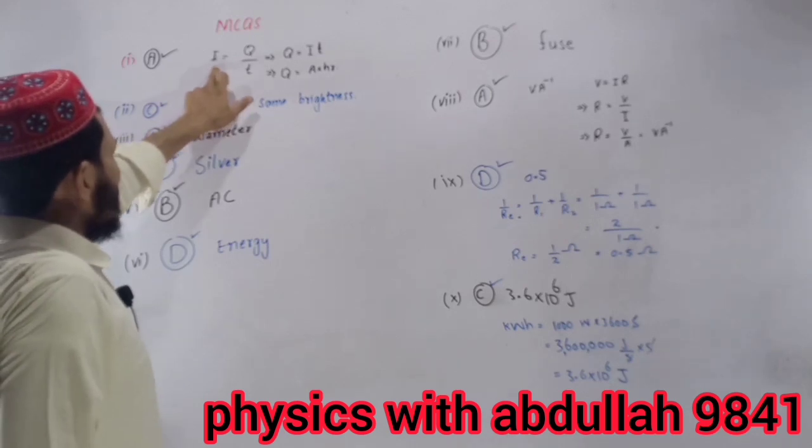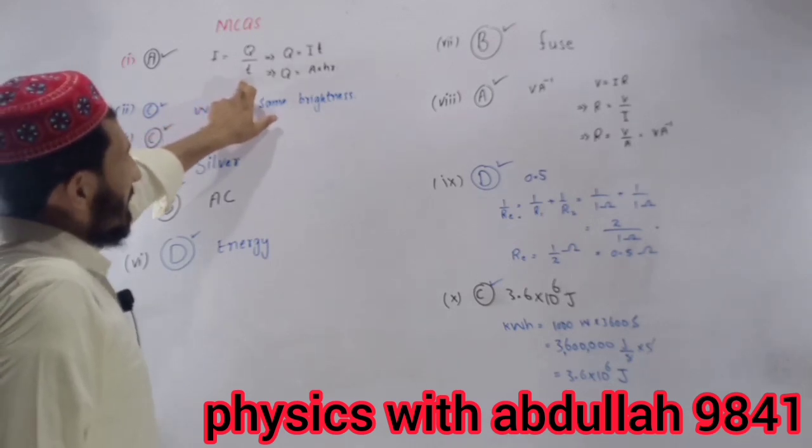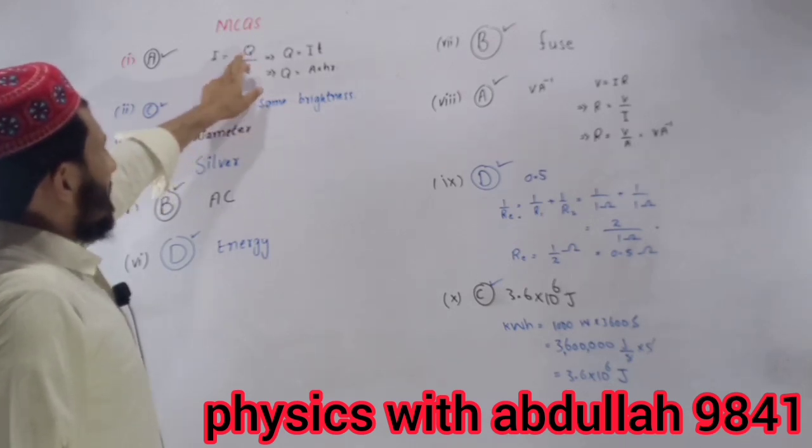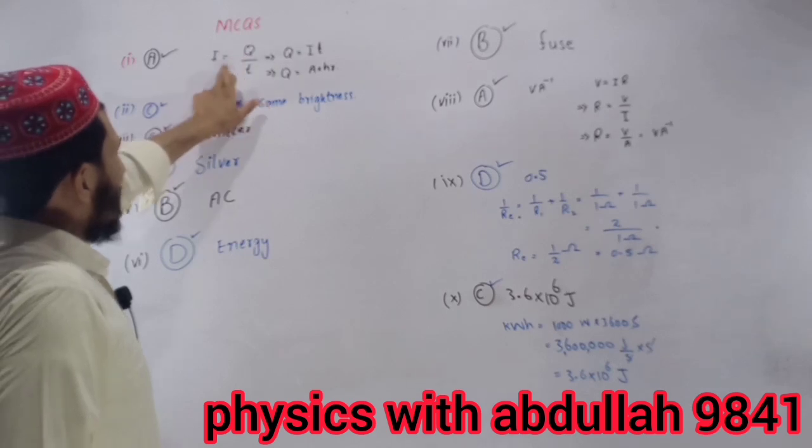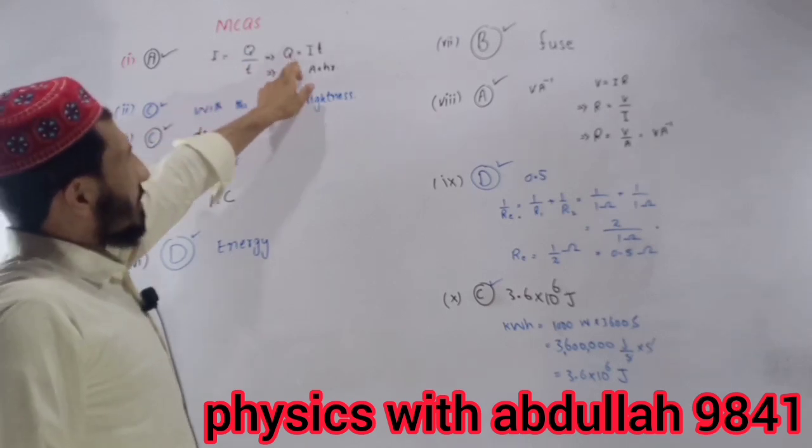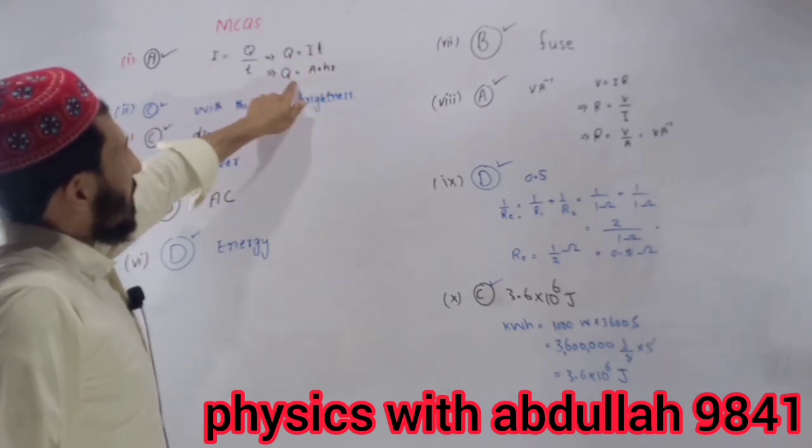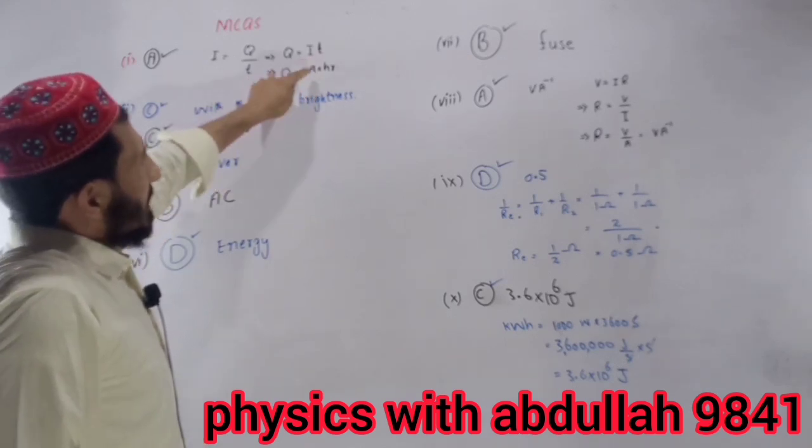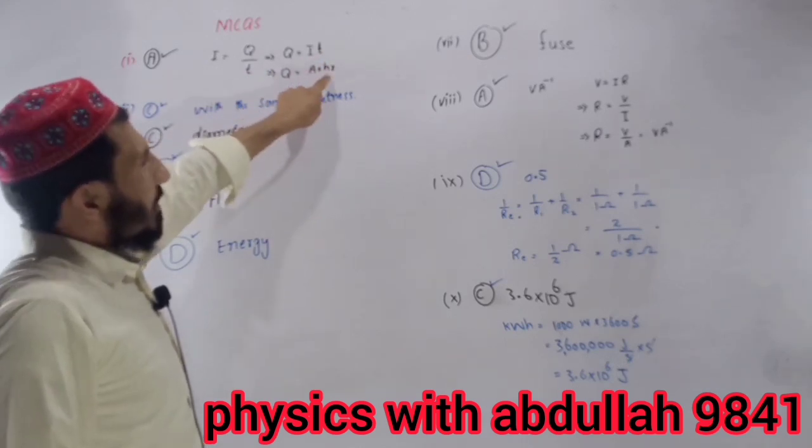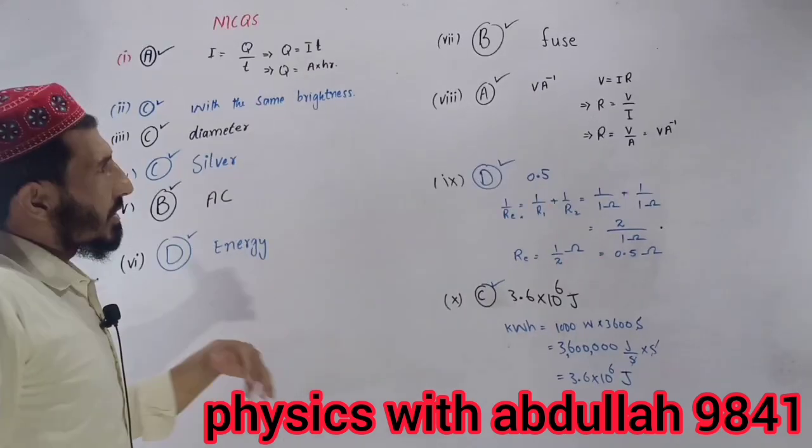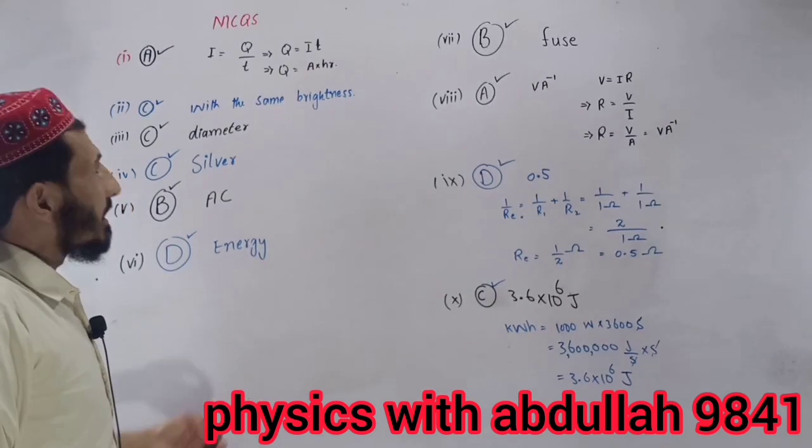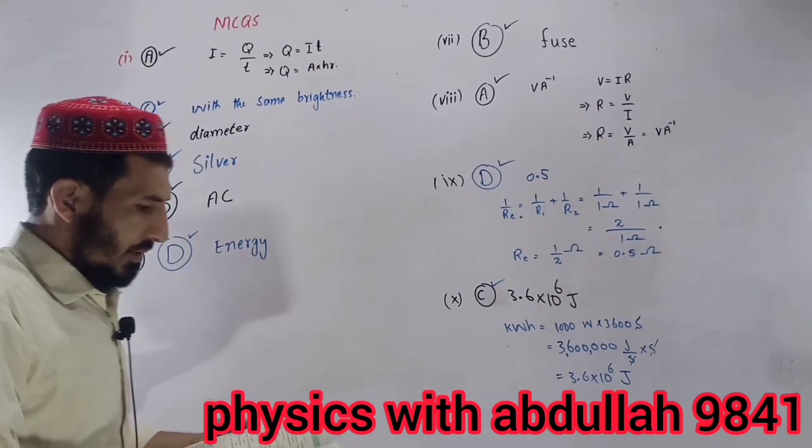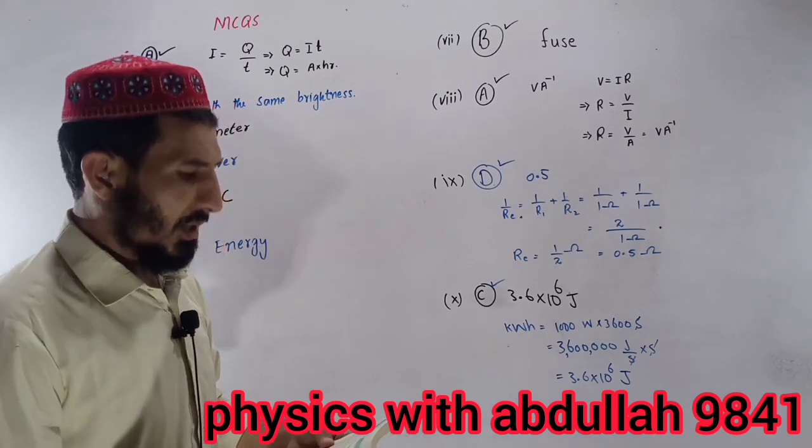I is equal to Q divided by T. From this formula, Q is equal to IT. So the current unit is ampere and time unit is hour, therefore ampere-hour is the unit of charge.